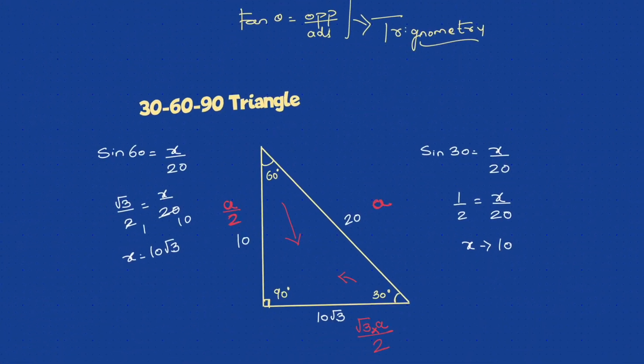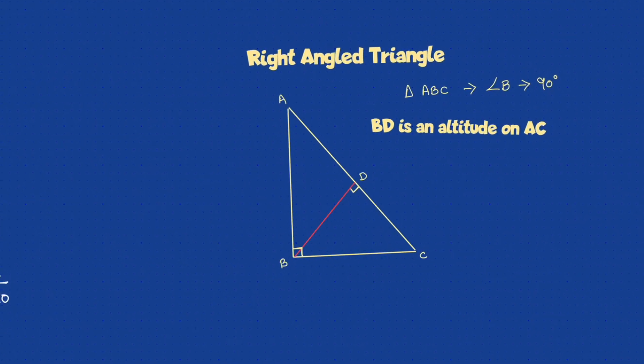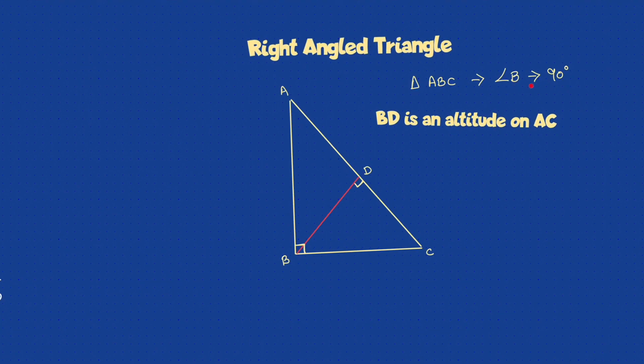After 30, 60, 90, let's move on to the next triangle, which is our right-angled triangle. So the right-angled triangle has angle 90 at B. Angle B is equal to 90 degrees in ABC.